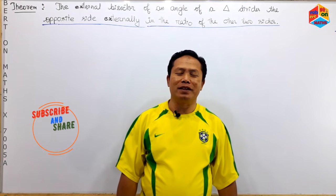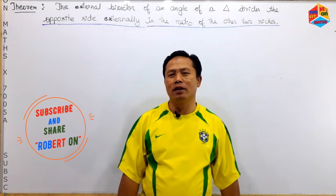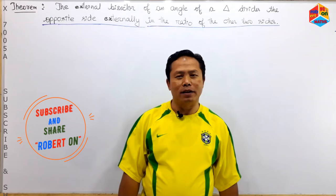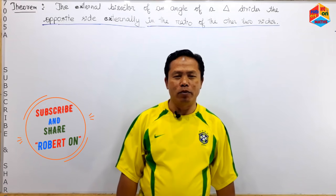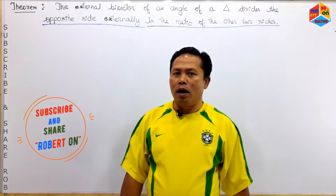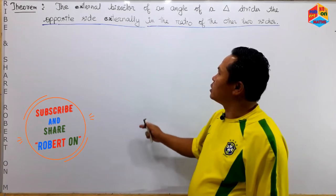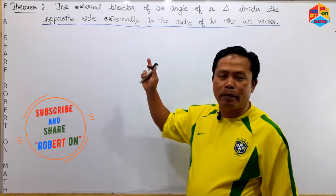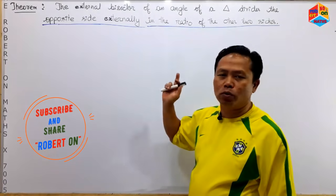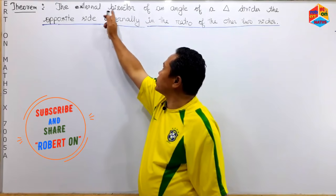Hello, my name is Rabatnu Maitinu Taram Nukshari. I am a stranger. If you have a problem with the internal and external bisector, you can see that there is an external bisector.